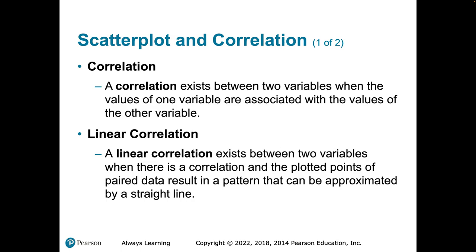You can probably tell by how deliberate I was in presenting that this is extremely important. Tattoo this into the brain. Scatter plots and correlation — this whole two-variable statistics we're studying in lesson two — examines the relationship between two quantitative variables. A correlation exists between two variables when there's a relationship or when the two variables are associated. Tunnel vision on what kind of variables: two quantitative variables.